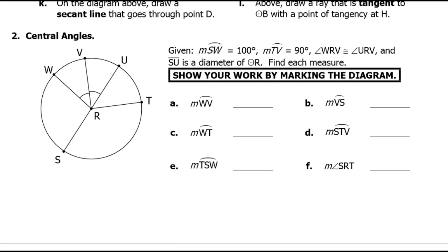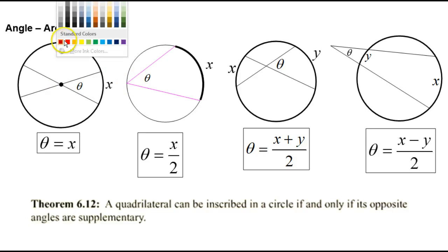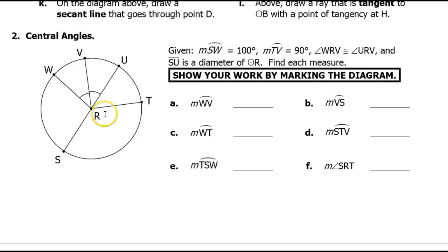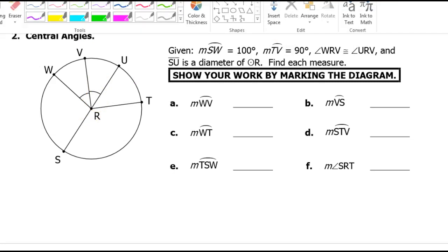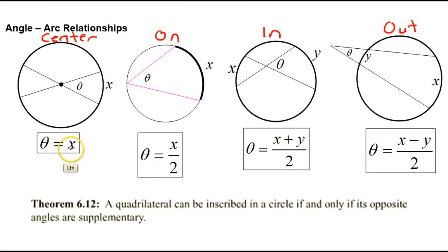Now we're getting into the pattern where we have to decide: is the angle at the center, on the circle, inside the circle, or outside the circle? Depending on where the vertex is, that tells us which formula to use. In this problem, all of these angles have their vertices at the center — it says 'central angles' right there — which means we're using the relationship that the angles and arcs will be the same.